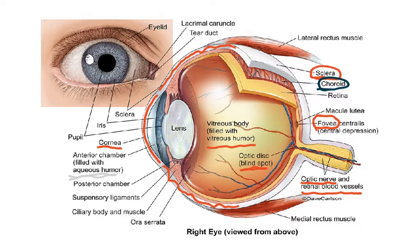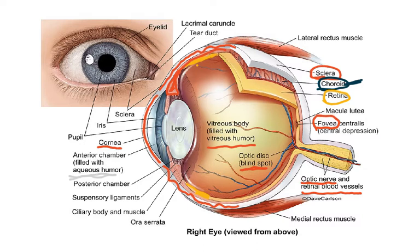The retina only covers the back two-thirds of the eye — it does not extend to the front. The choroid continues forward as the ciliary body, and then there is a projection going right in front. This part of the eye is called the iris.